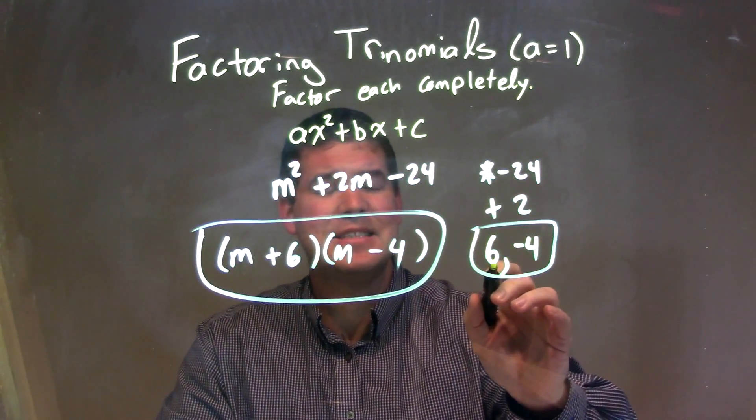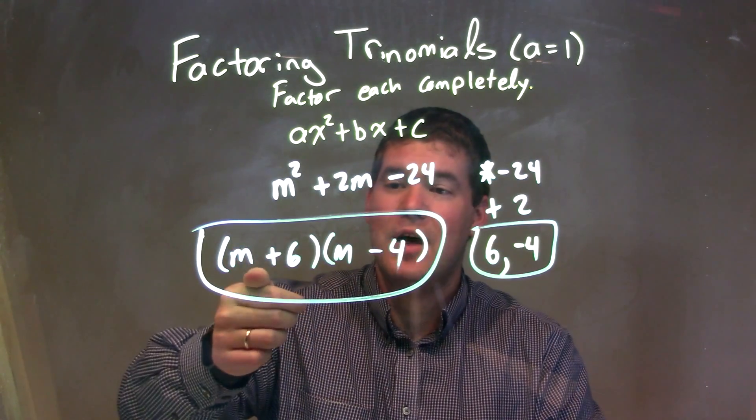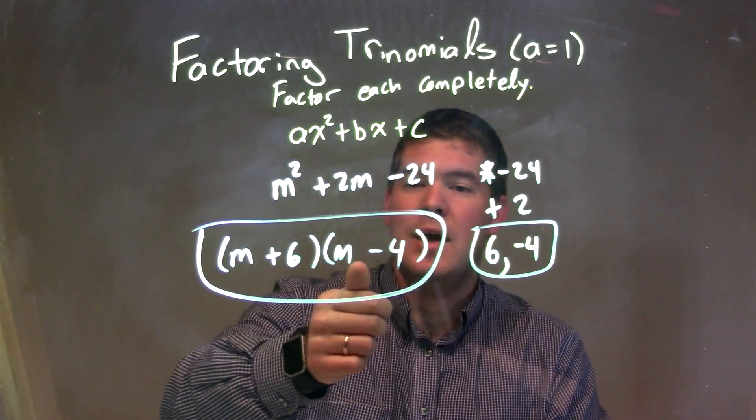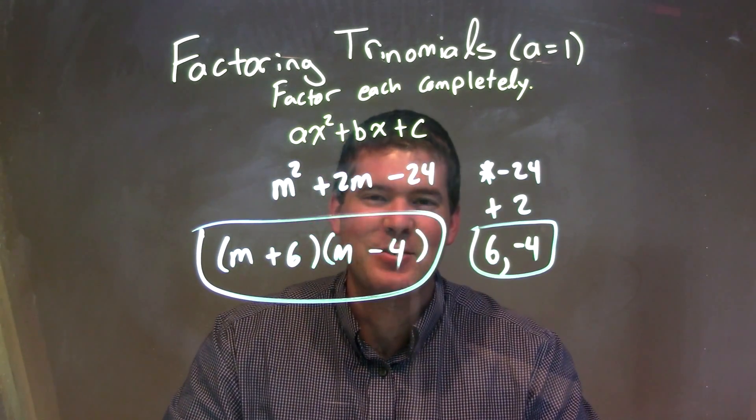Well, that would be a positive 6 and a negative 4. So when I write this in factored form, I have m plus 6 right there times m minus 4, and that would give us our final answer of m plus 6 times m minus 4.